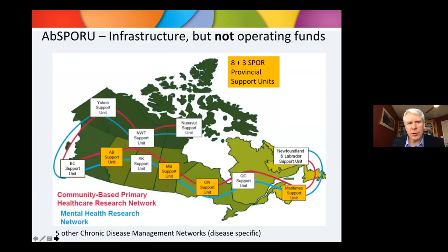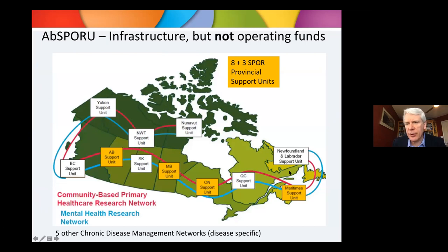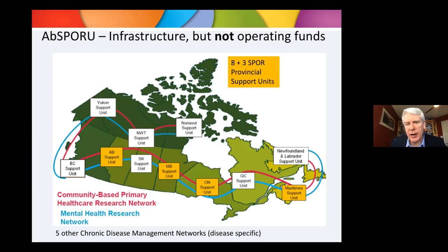The Alberta SPORE Support Unit is one of a national network. There are eight provincial and three territorial SPORE support units — the territorial ones aren't quite up and running yet, but all eight provinces are running and interconnected. For individuals who want to do research using administrative health data, we can put them in touch with folks in Manitoba, BC, Ontario, and something called the Health Data Research Network to facilitate analyses between provinces.